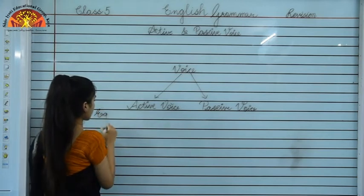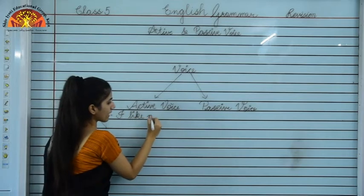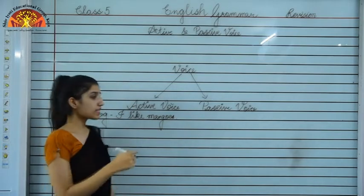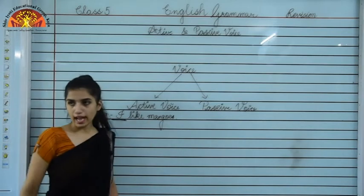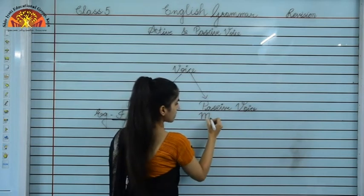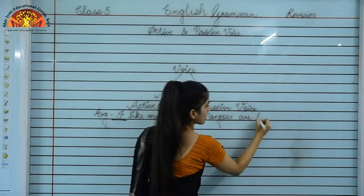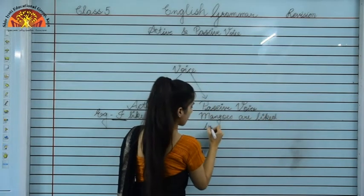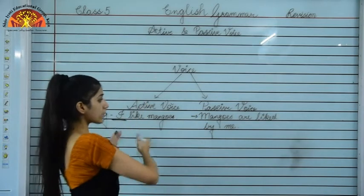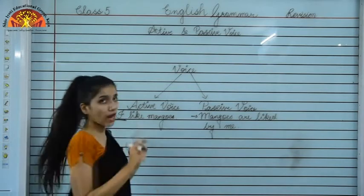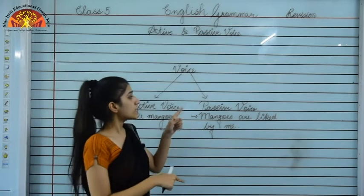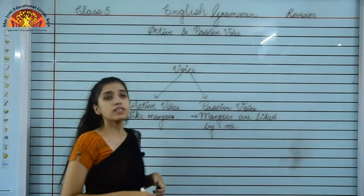An example of active voice: 'I like mangoes.' Here the subject 'I' is directly performing the action. The passive voice of this sentence is: 'Mangoes are liked by me.' The meaning of both sentences is the same but the way to write them is different. When the subject directly performs the action, that is active voice; when the subject receives the action, that is passive voice.